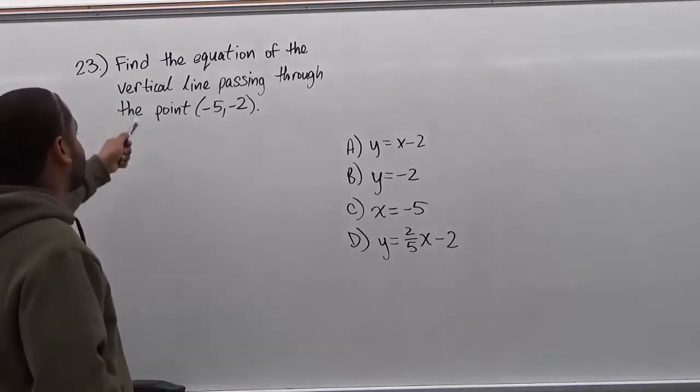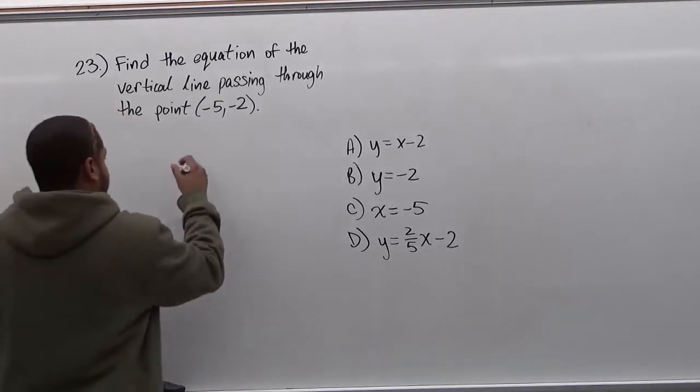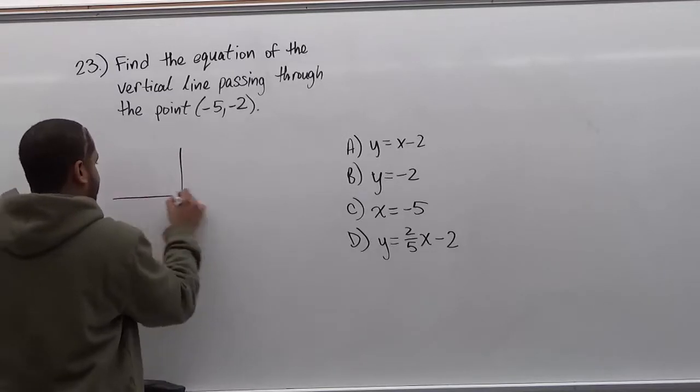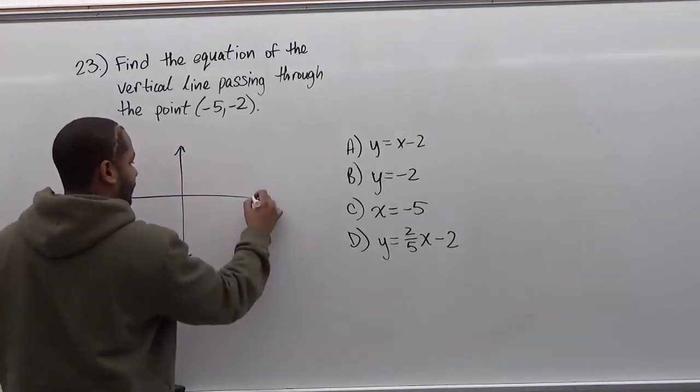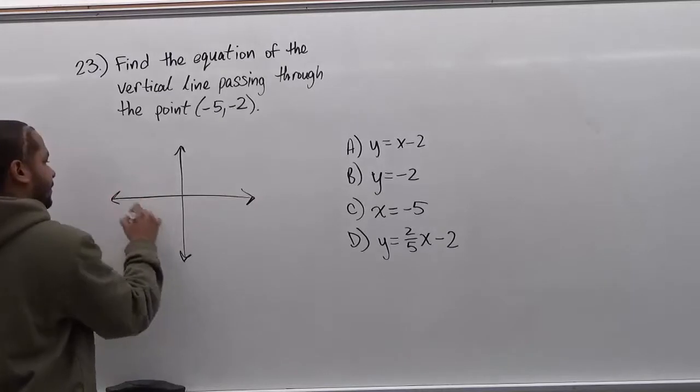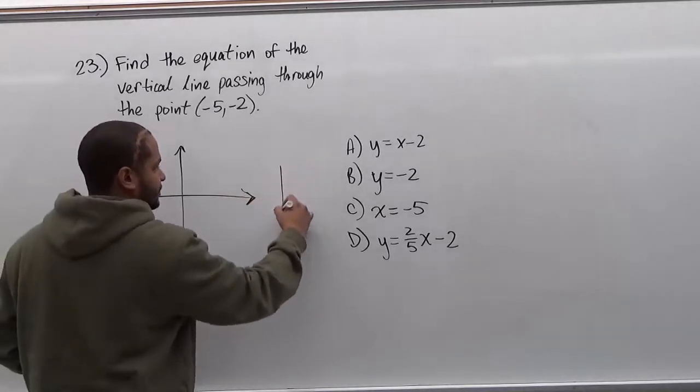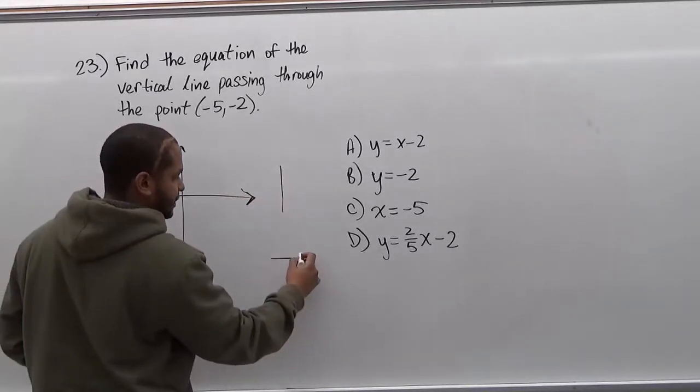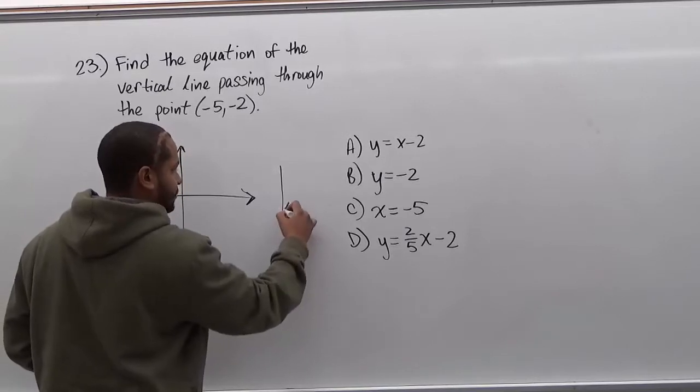Now this is a vertical line, right? So let me just draw a diagram of this. Here we have our y-axis, we have our x-axis here going sideways, and the vertical line is always just going up and down, while horizontal lines go this way, vertical ones go this way.